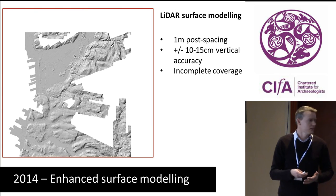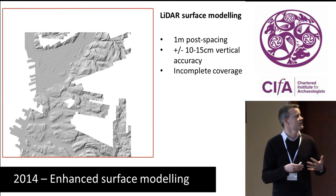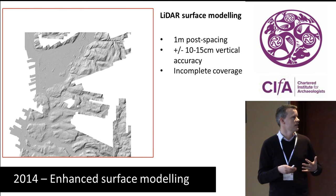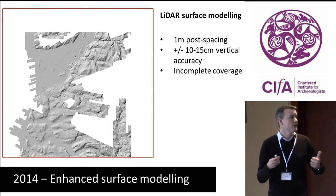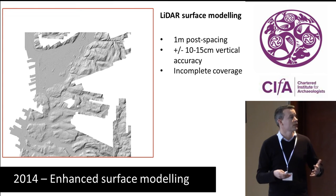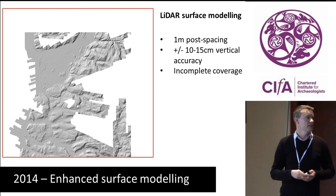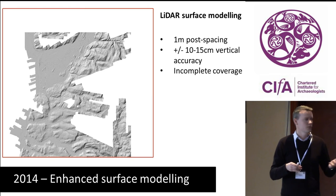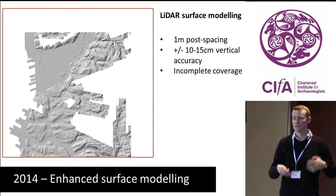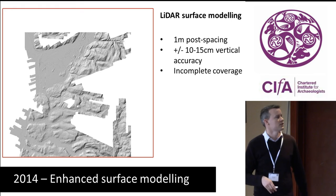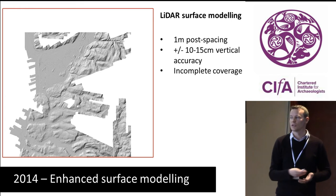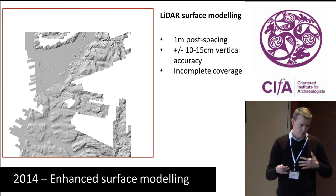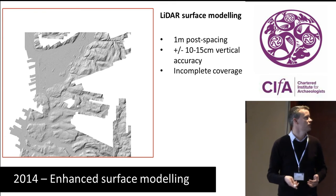Running quickly through the process: we obtained LiDAR surface data, which gives five times more information at one-metre spacing, making it much more accurate. The vertical accuracy is 10 to 15 centimetres. The only downside is that it's captured by the Environment Agency to identify flood risk in low-lying areas, so it doesn't give complete coverage — but you can blend it with the radar data to maintain potential coverage.